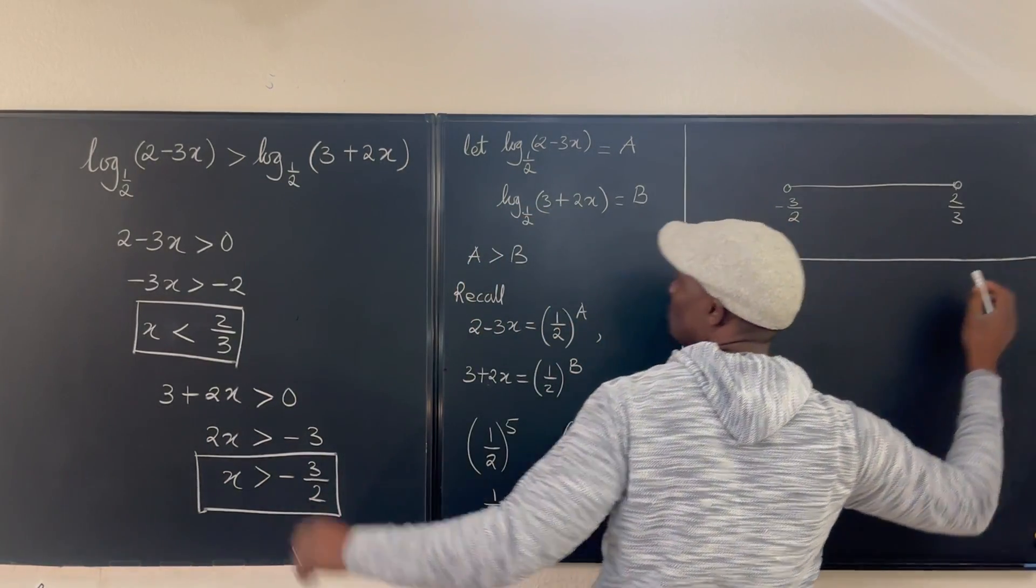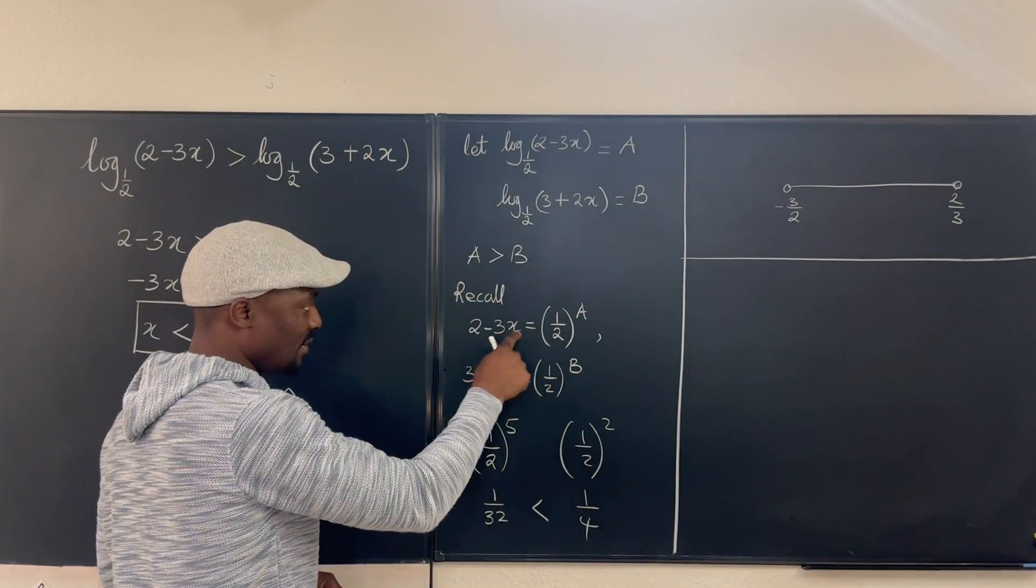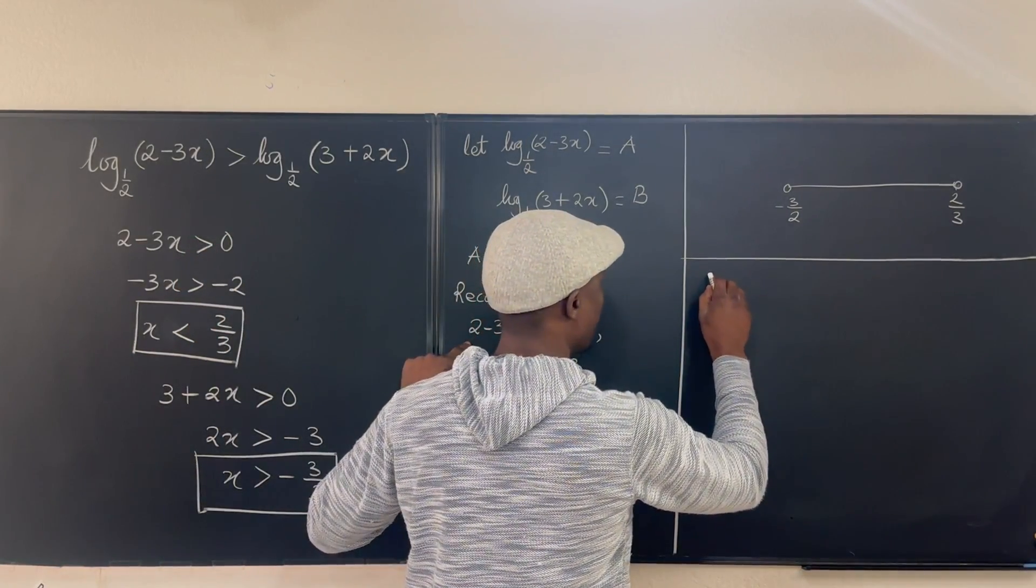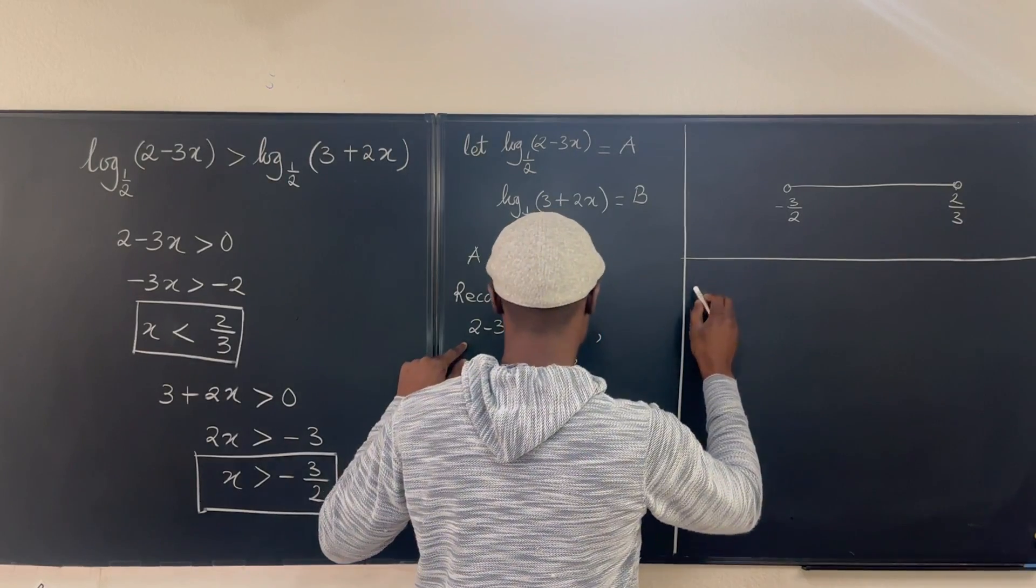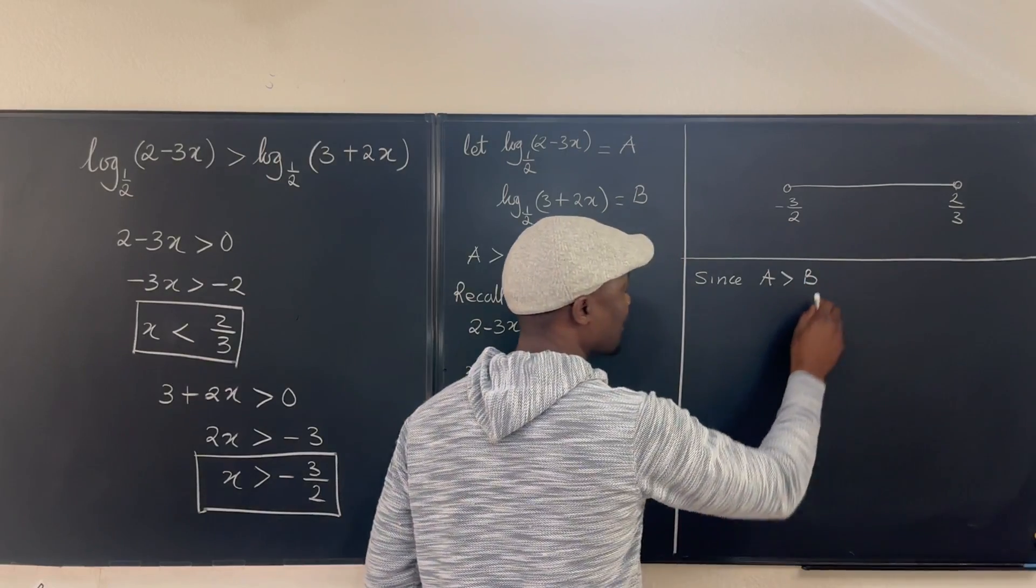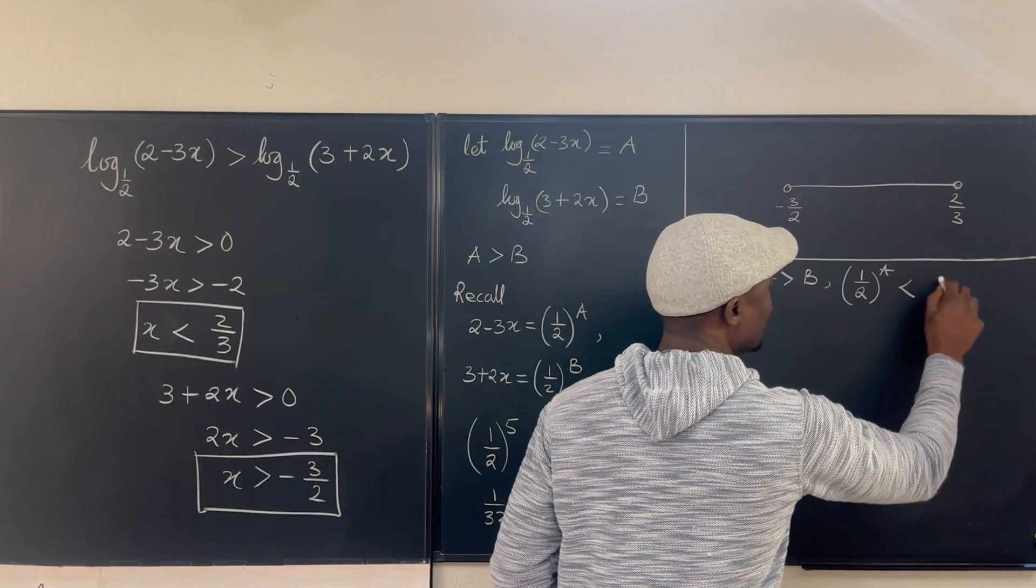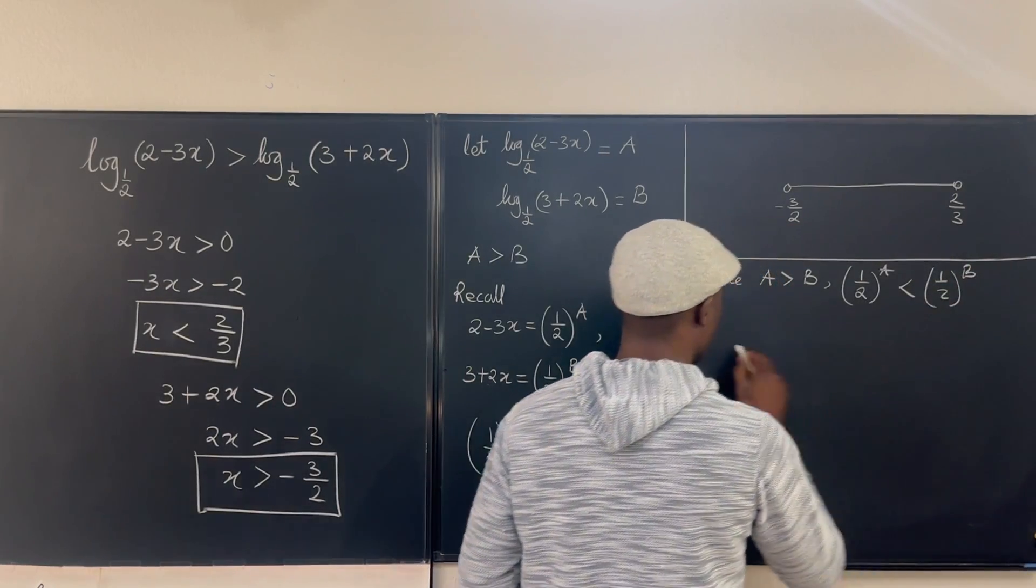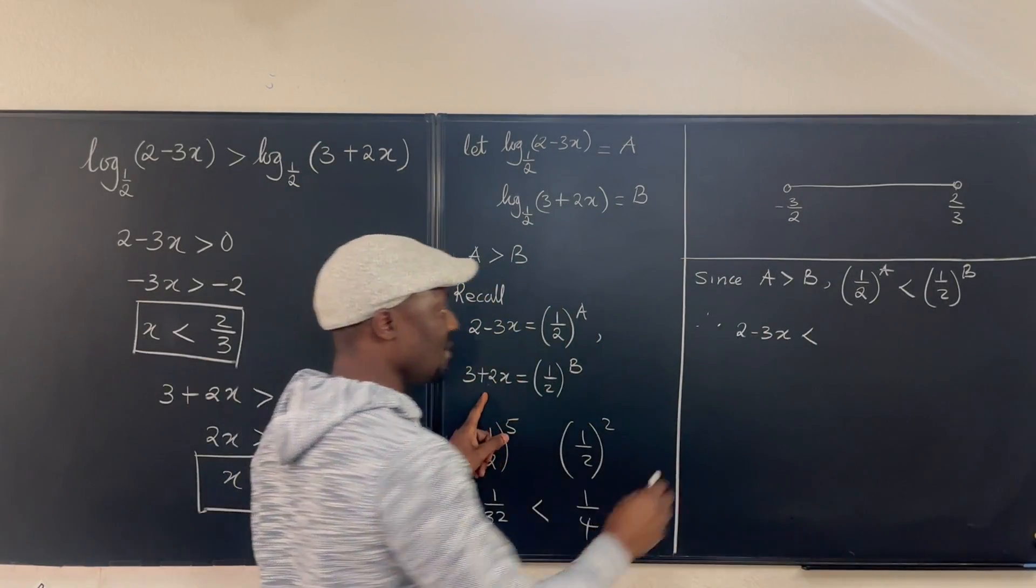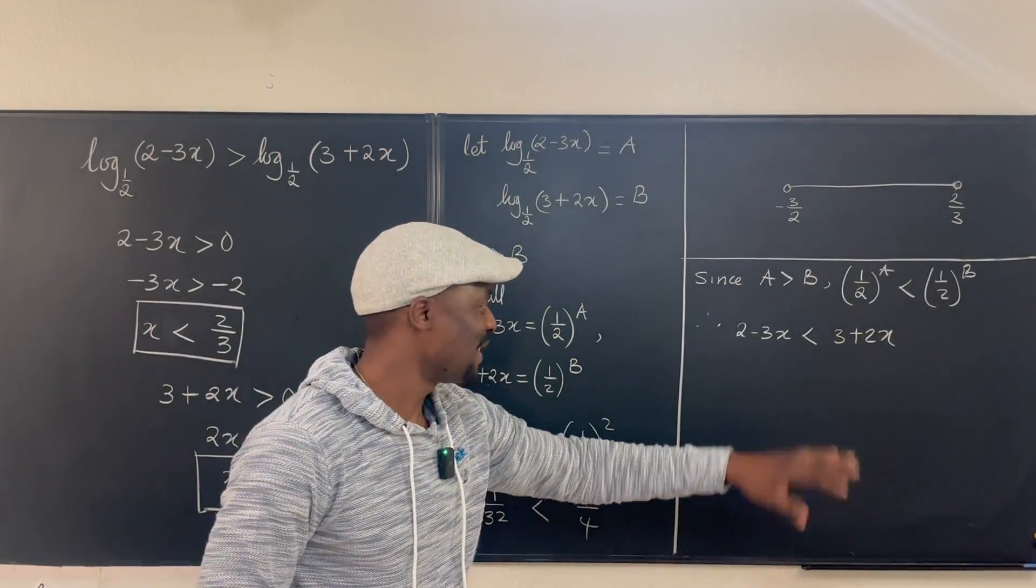So what we have is, we can now say that 2 minus 3x is less than 3 plus 2x. Okay. So let's write it out. Since A is greater than B, one half raised to power A is less than one half raised to power B. Therefore, this 2 minus 3x must be less than 3 plus 2x. And all we have to do is solve this and once you solve this, you get your answer.